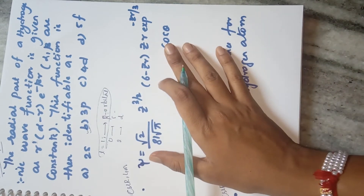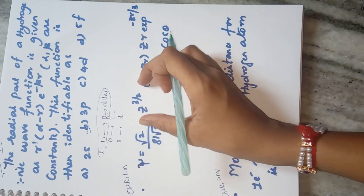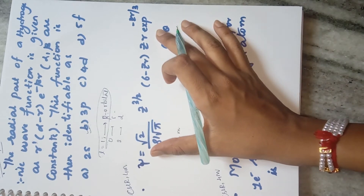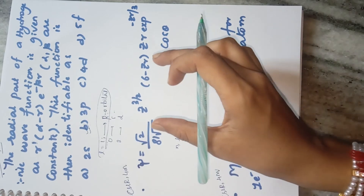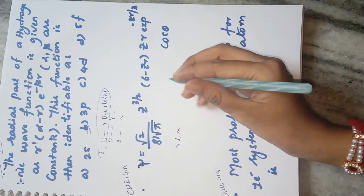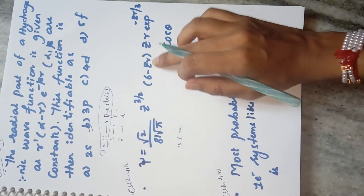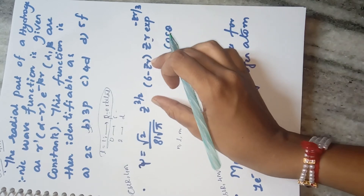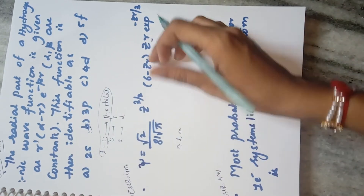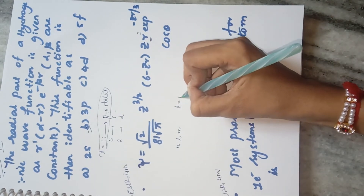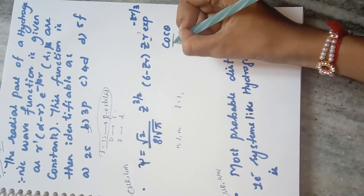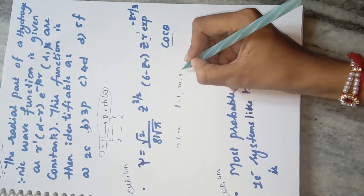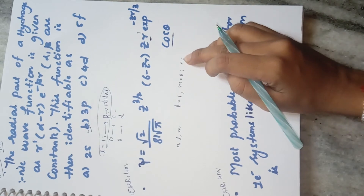Now a third question of the same kind: you have to identify the orbital, but this time the full wave function gives you n, l, and m values. From the wave function, look for the power of r — here r appears with power 1, so l = 1. For the angular part, cos θ is present, and cos θ corresponds to m = 0.